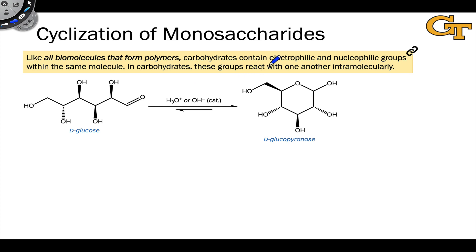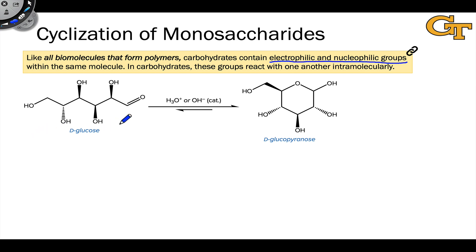In an earlier video we alluded to the fact that carbohydrates contain both electrophilic and nucleophilic groups within their structures, and the way these are arranged within the open chain monosaccharides like the D-glucose structure opens the door to cyclization reactions.